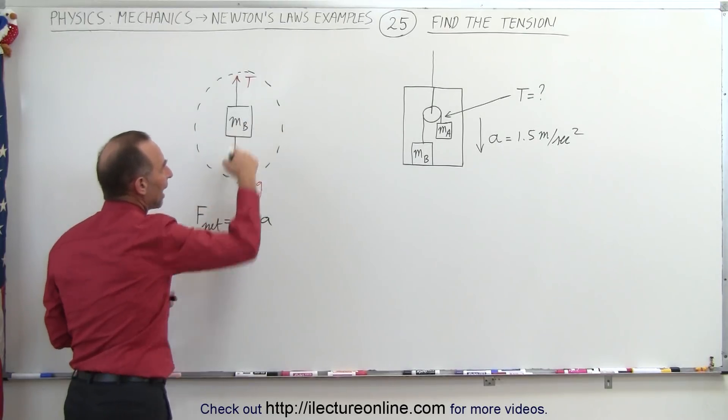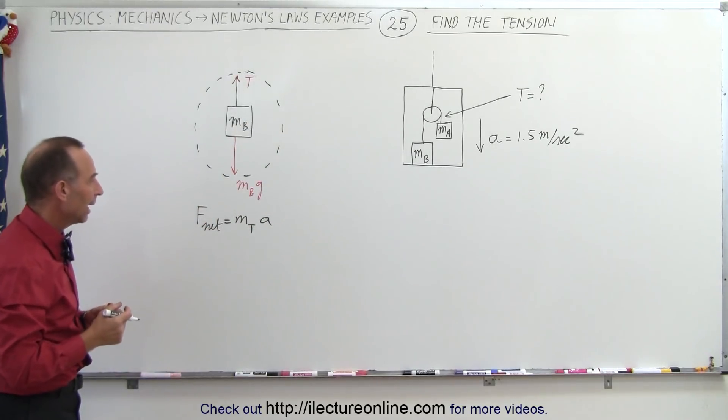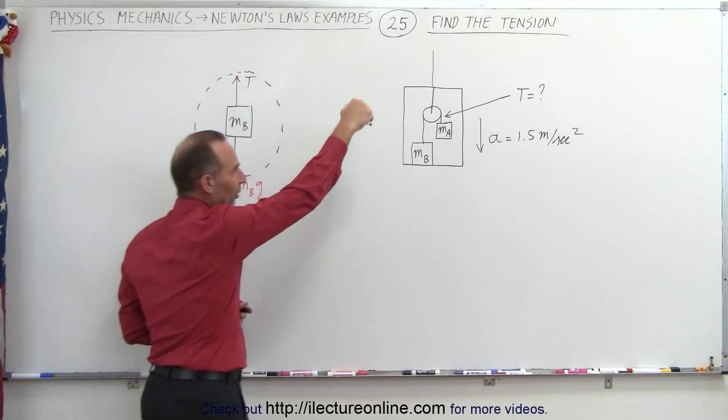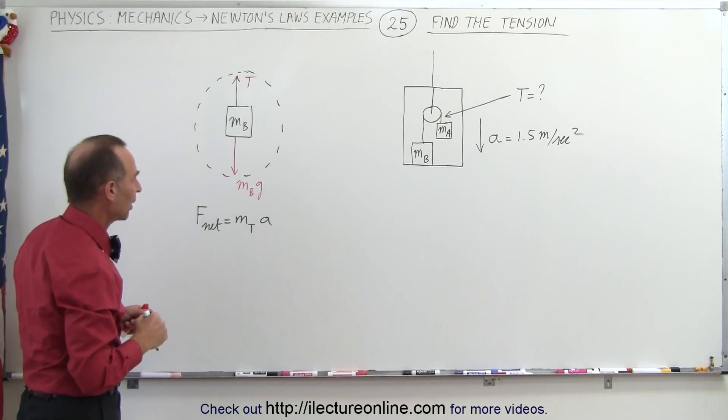Here the total mass is simply the mass of the block m_b, and notice that the whole block and the elevator will be accelerating downward at 1.5 meters per second squared.